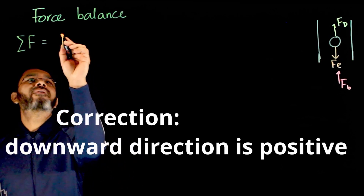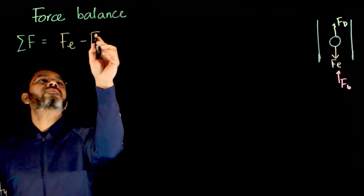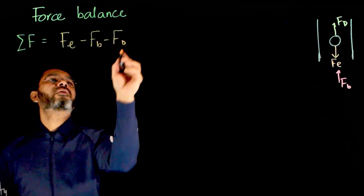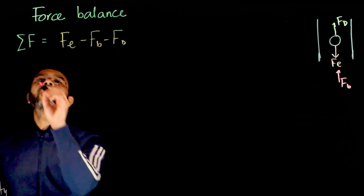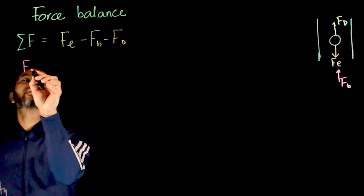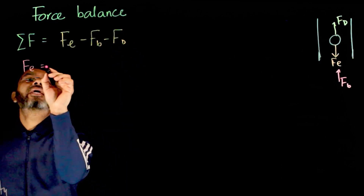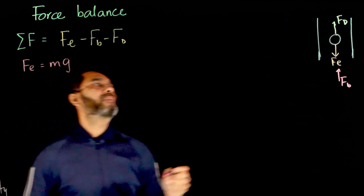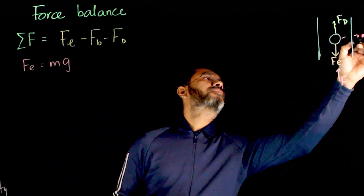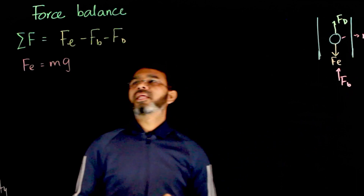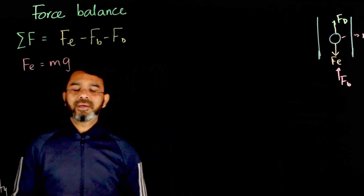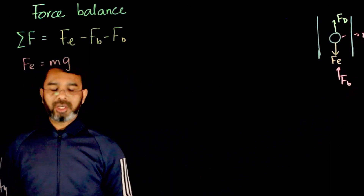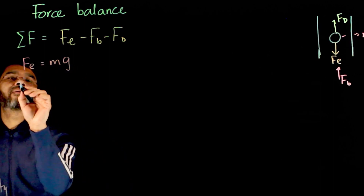We know the gravitational force F_e is given by mg, where m is the mass of the particle and g is the gravitational acceleration. The buoyancy force F_b is given by the force exerted by the displaced fluid.